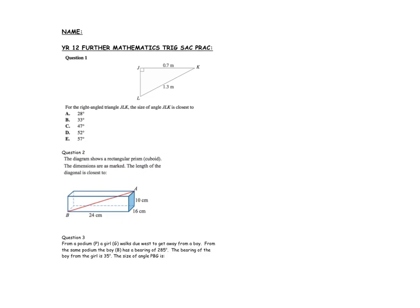We have a right angle triangle and we want the size of angle JLK. When they say that, it's the letter in the middle that's the angle they want. Because it's a right angle triangle we can use SOHCAHTOA. The hypotenuse and the opposite side are identified, so we use sine: angle equals the inverse sine of O over H, which is 0.7 over 1.3.